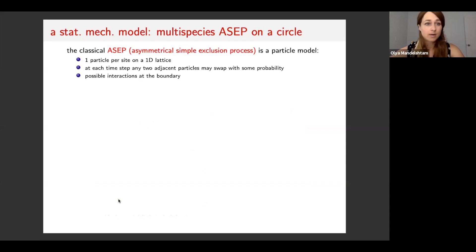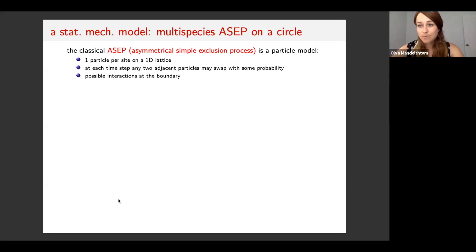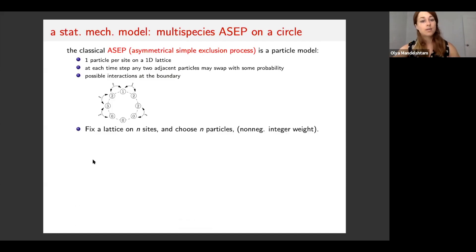Now I will move on to the second part of the story: a statistical mechanics model called the ASEP. In our setting, we are looking at the multi-species ASEP on a circle. In general, the classical ASEP is a one-dimensional particle process on a lattice that in our case is finite, but it may also be an infinite lattice. At each time step, any two adjacent particles may swap with some probability. If the lattice has a boundary, particles may enter or exit at the boundary locations. But in our case, our ASEP is on a circle, so we don't have a boundary.